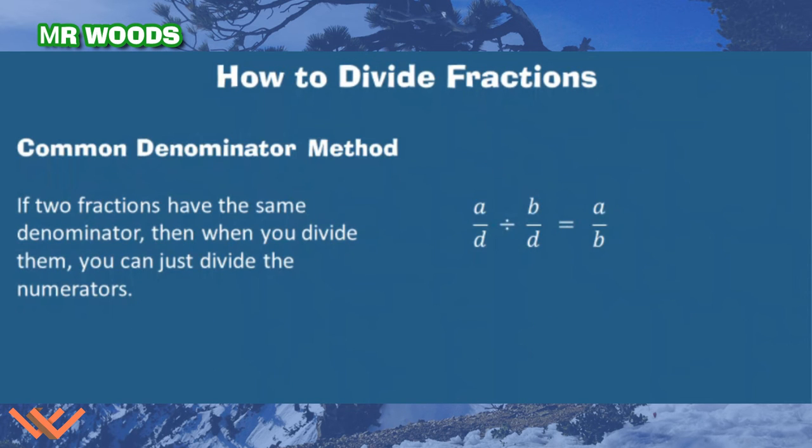With fractions, when you're dividing them, you need to remember there's some easier ways to solve this. So we have the common denominator method. This is where we have two fractions, and they both have the same denominator. And the numbers up top, don't worry about those. But as long as we have the common denominators, then you can just divide by the numerators. It's like, whoa, wait a minute. How do I do that? So it's going to be A divided by B, which is a fraction A divided by B.